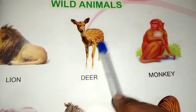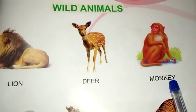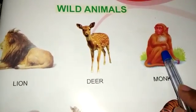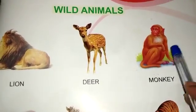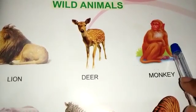What is this? This is a monkey. What is this? This is a monkey. What is this? This is a banana.